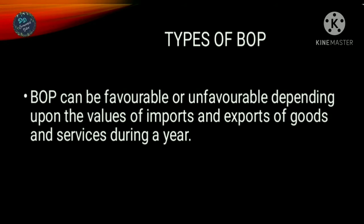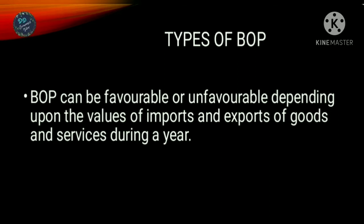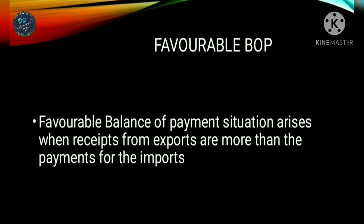What are the types of BOP? Favorable and Unfavorable. Favorable is the positive side, Unfavorable is the negative side. If a country exports more goods than what it imports, then the balance of trade is said to be surplus — that is favorable for the country.